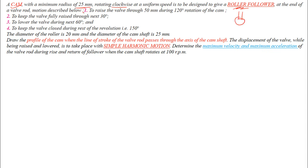The motions are: first, raise the valve 50 mm during 120° rotation (s = 50 mm, angle of rise = 120°); then dwell for the next 30°; then return to original position during the next 60°; and keep the valve closed during the rest of the revolution with a dwell of 150°.